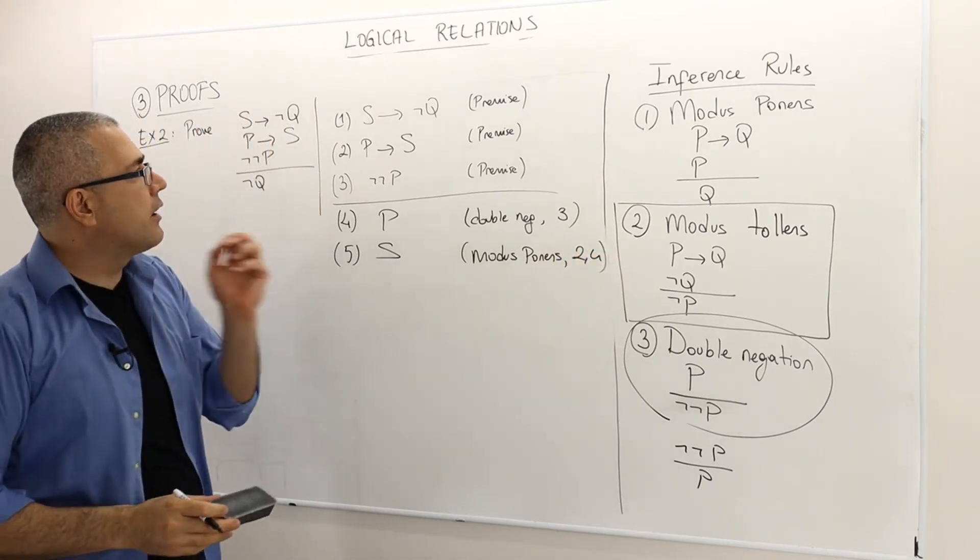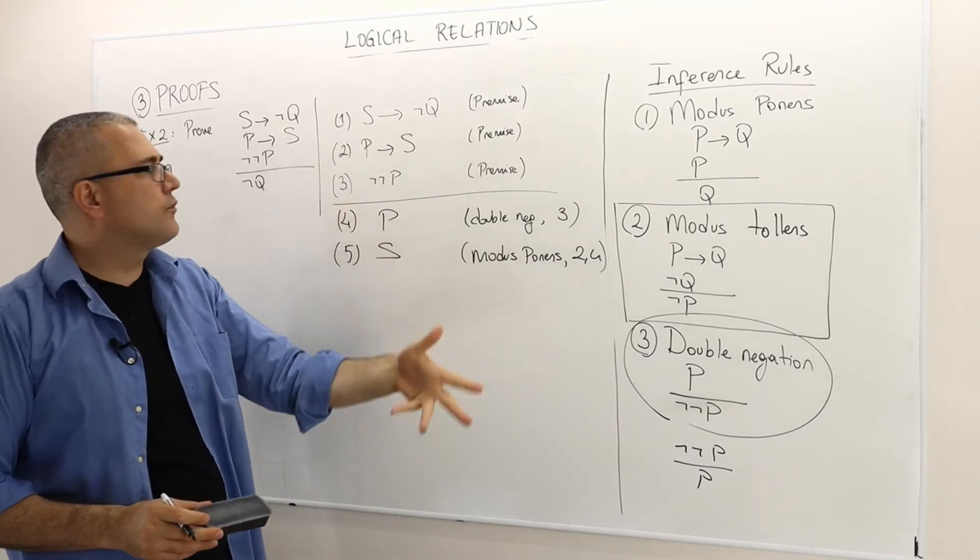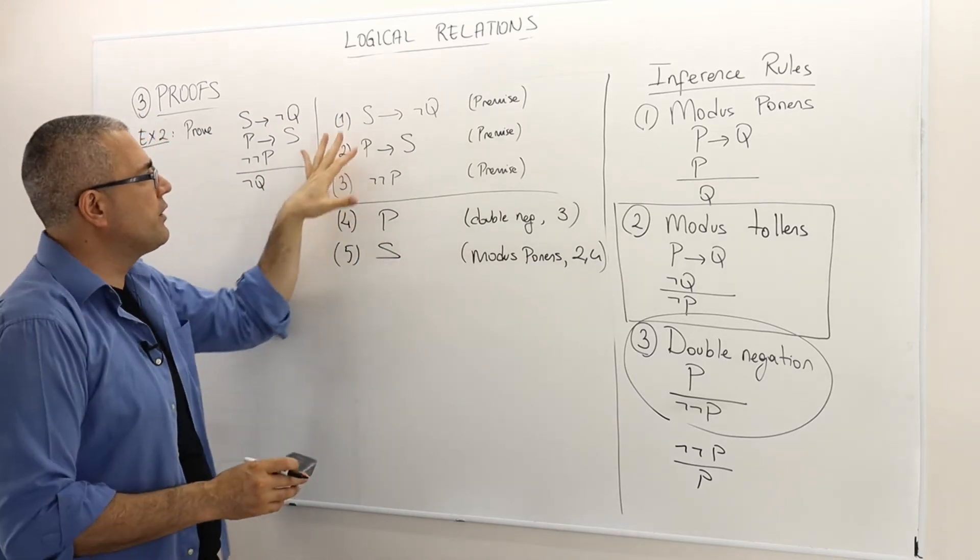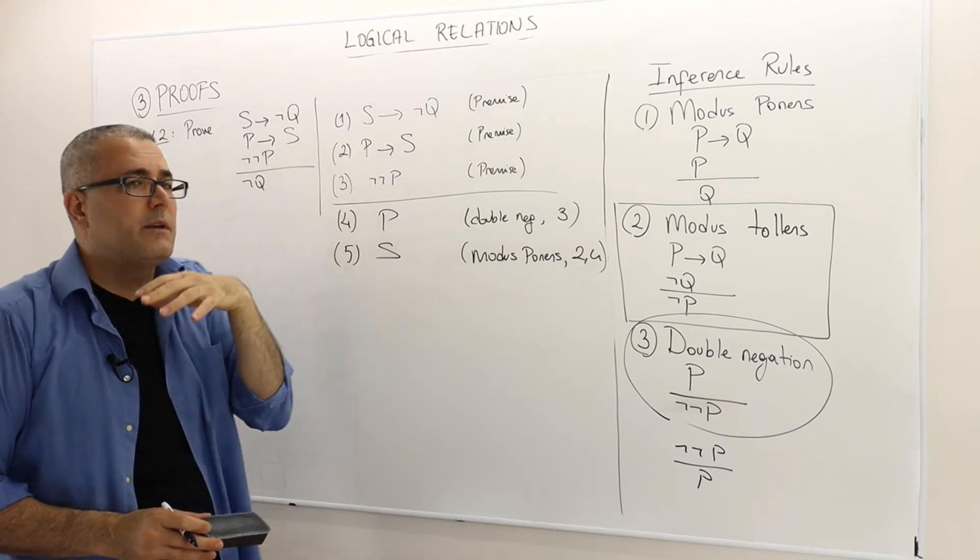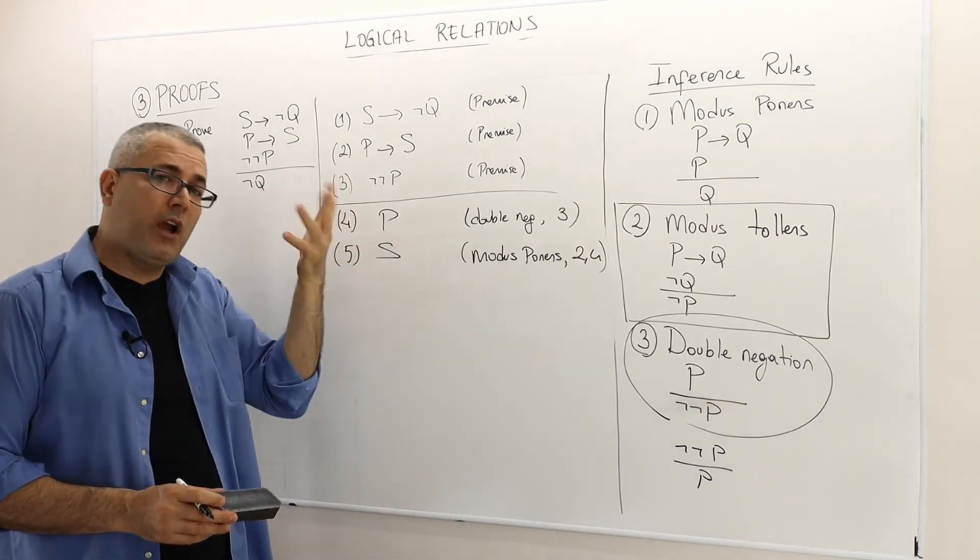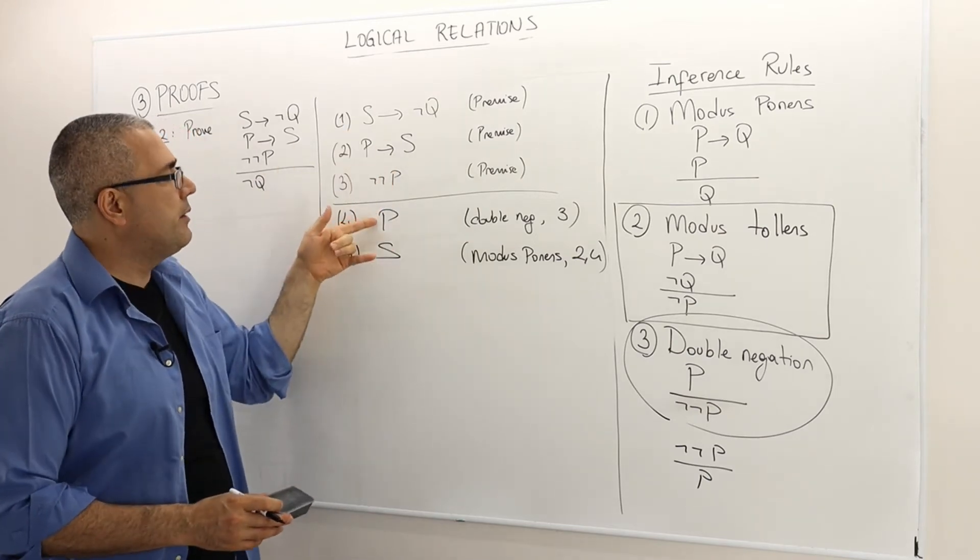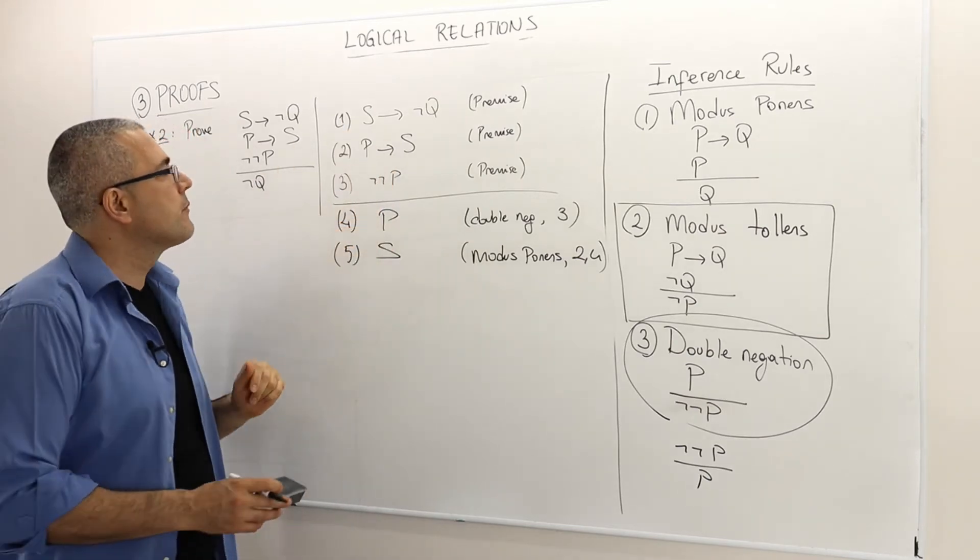So, now I have arguments S implies not Q true, P implies S true, not not P is true. I already used the last two. I can use them again if I need to, but I have two other premises now, interim premises kind of, P and S. They're also true.